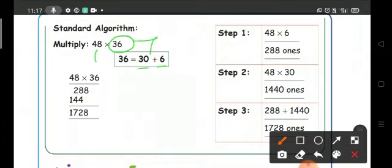Then multiply 48 times 30 and 48 times 6. So 48 times 6, we get the answer 288 ones.